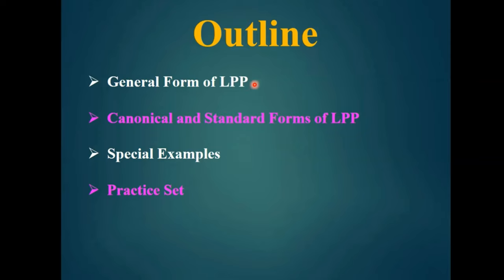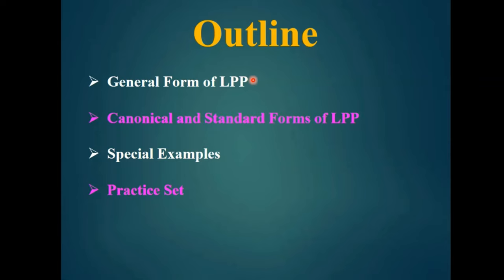The first topic we are going to see is the general form of LPP - how the LPP looks in general. Till now we have seen LPP for two or three variables, but if it has m number of constraints and n number of variables, what is the general form? Next we are going to see canonical and standard forms of LPP - what they mean and why we need them.